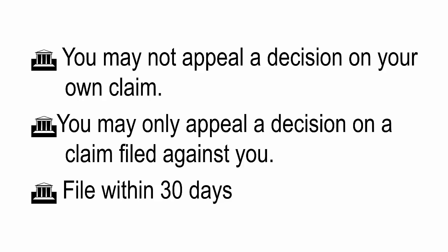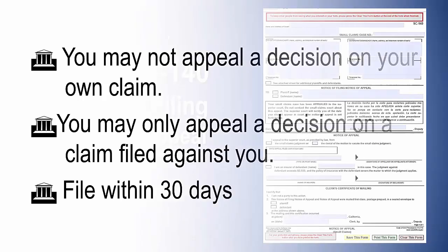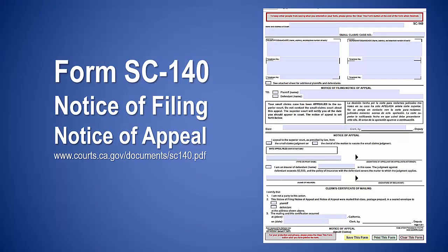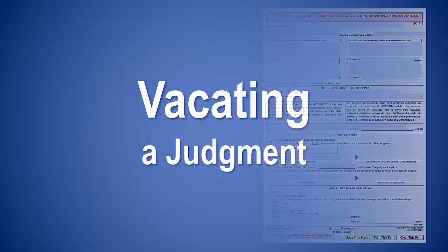You may not appeal a decision on your own claim; you may only appeal a decision on a claim filed against you. You have 30 days from the mailing of the notice of entry of judgment to file an appeal. To file an appeal, complete form SC-140 and file it at the court within 30 days from when the notice of entry of judgment was mailed. You will need to pay the filing fee.